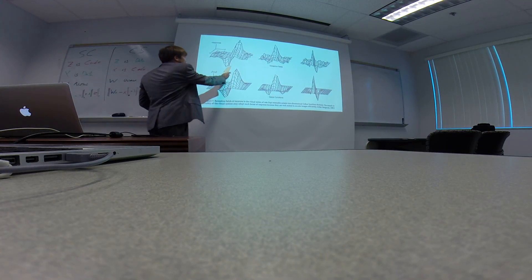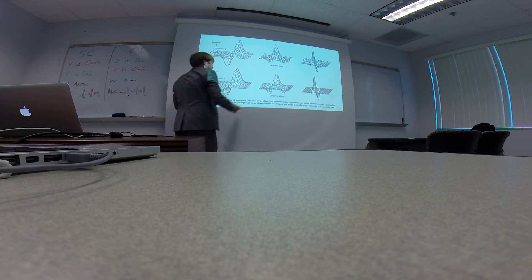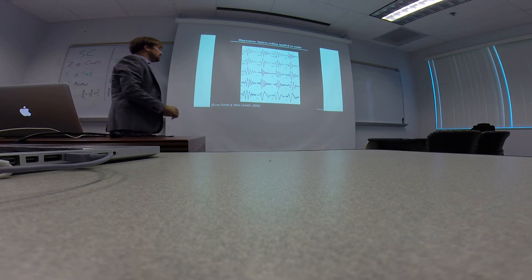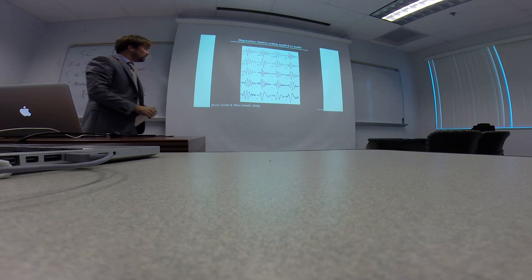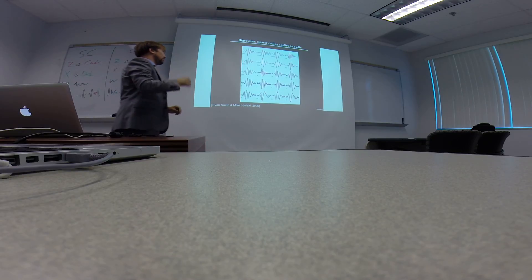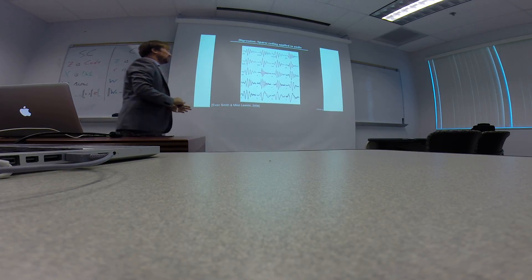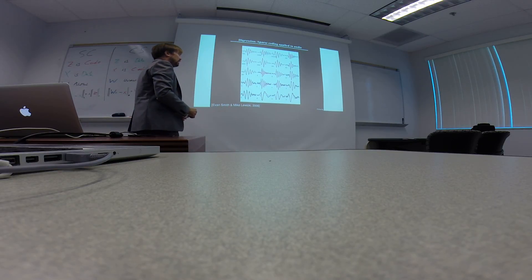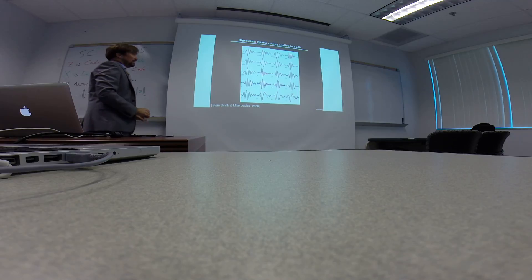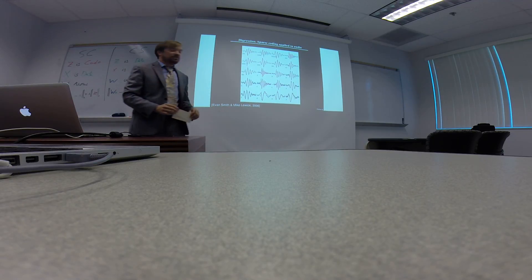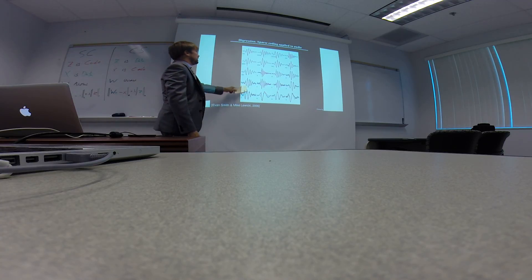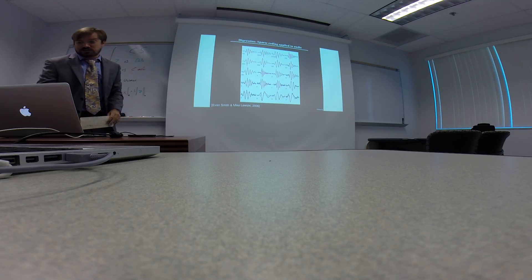When they actually measure receptive fields in animals, they look like this, and mathematically they look like this too — they approximate each other. The same thing happens amazingly in A1, the auditory cortex. People have done experiments measuring the auditory response of cats using cochlear implants, and looking at the data in blue versus the model in red, they basically correspond — suggesting that the auditory system may also be applying a sparse coding on its inputs.